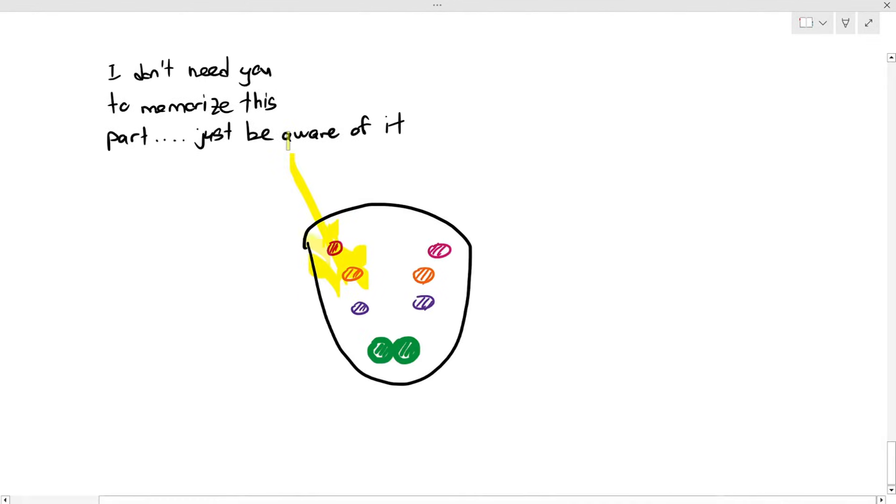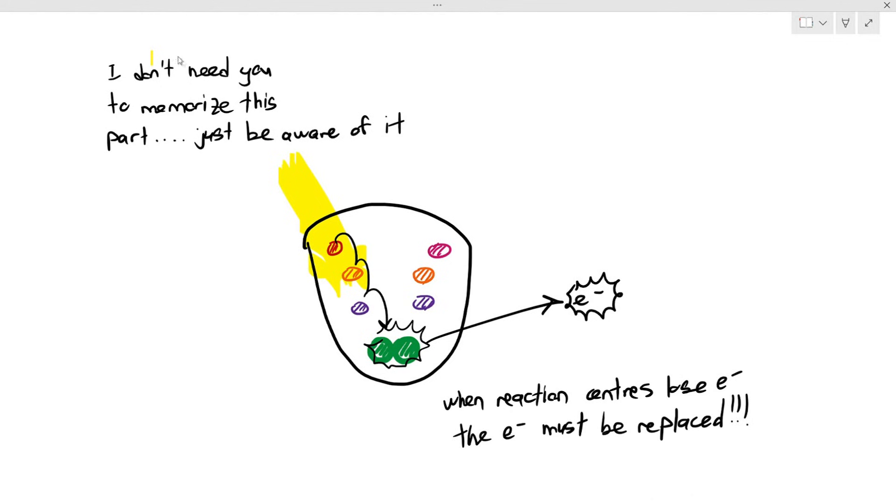the reaction center has to release an electron. We know that's how the photosystem works. But when the reaction center releases out an electron, that electron that is lost must be replaced by another electron. You don't need to memorize that. I just need you to understand this.